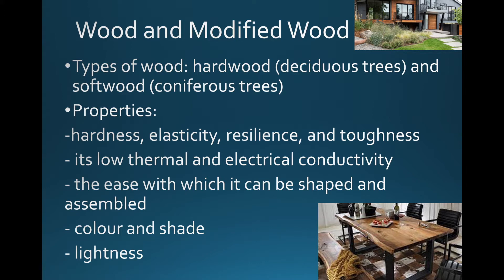So why would we choose wood as a construction material? Its properties are hardness, elasticity, resilience, and toughness. It doesn't conduct electricity or heat very well. We can shape it very easily and assemble various pieces together, making it a great construction material for homes and furniture. It comes in various colors and shades so we can use it aesthetically, and it's a light material.